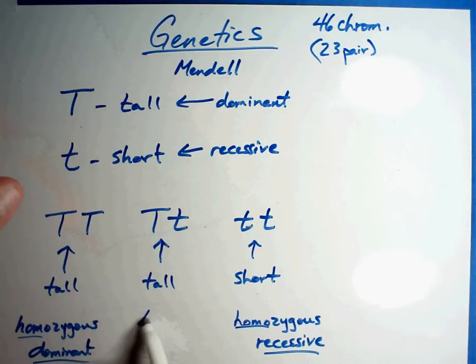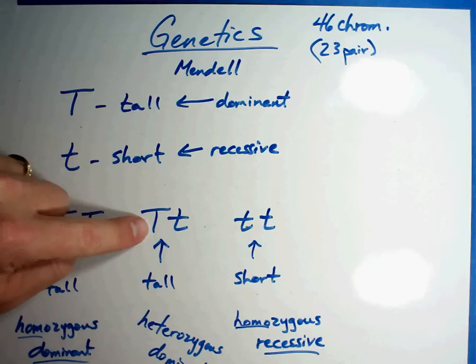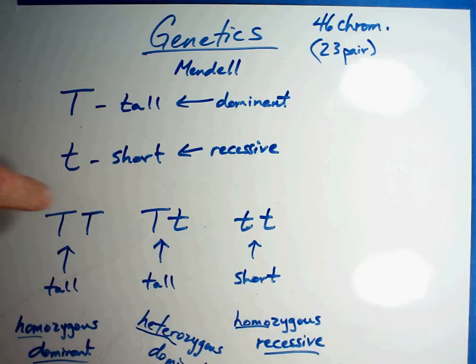This one, on the other hand, in the middle is called a heterozygous dominant. Now, why dominant? Because I'm seeing the dominant gene. Heterozygous. Hetero means different. So you're going to have dominant genes, you're going to have recessive genes. When you put them together, when you get one from the mom and one from the dad, this is one version, homozygous dominant.